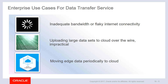Now let's talk about the use cases for this service. The first one is obvious: you have a large amount of data to move but don't have the bandwidth to do so. Other use cases include customers who have good bandwidth but cannot dedicate full bandwidth for data transfer due to other application workloads — in that case, the Data Transfer Service should be evaluated as a possible option. The last use case is to move edge data periodically to the cloud. If a customer has multiple remote sites that lack solid internet connectivity, they can utilize the Data Transfer Service to periodically move data to the cloud for storage and processing.